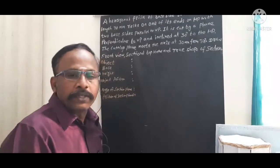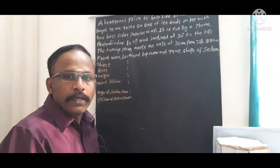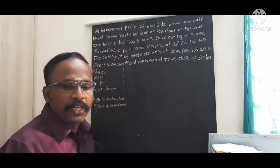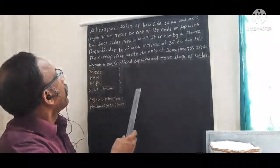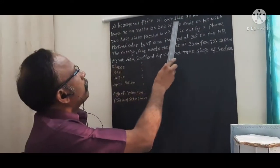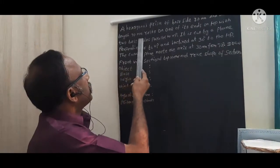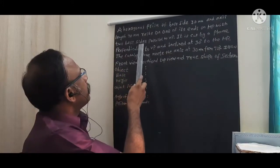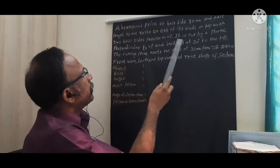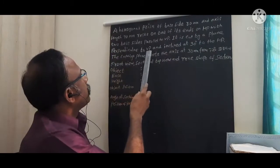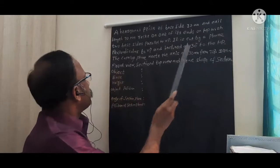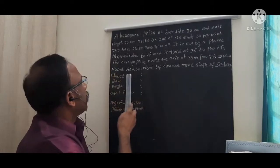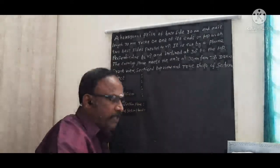Welcome to the engineering drawing subject. Today we are going to discuss one important problem in section of solids. The problem is: a hexagonal prism of base side 30 mm and axis length 70 mm rests on one of its ends on HP with two base sides parallel to VP. It is cut by a plane perpendicular to VP and inclined at 30 degrees to the HP. The cutting plane meets the axis at 30 mm from the top. Draw the front view, sectional top view, and true shape of the section.